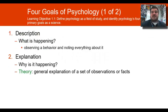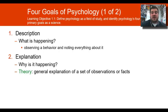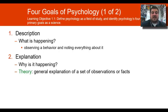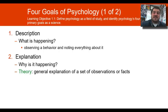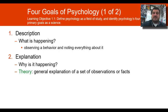What are the four goals of psychology? First, we have to describe what is happening — observing a behavior and noting everything about it: what is happening, where is it happening, who is it happening to, what are they doing when it's happening, what time is it happening? As unbiased as possible, observe and describe what is happening in the situation.